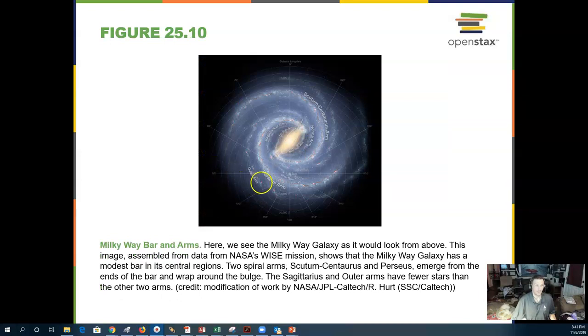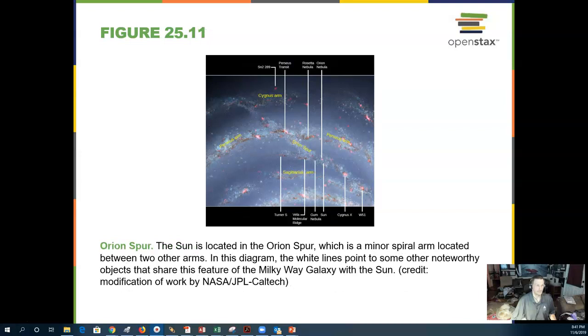There are a number of arms that come off the Milky Way galaxy, and they have different names depending on what constellation we see them in. Here we see the Orion spur, and we see lots of gas and dust and star-forming regions.